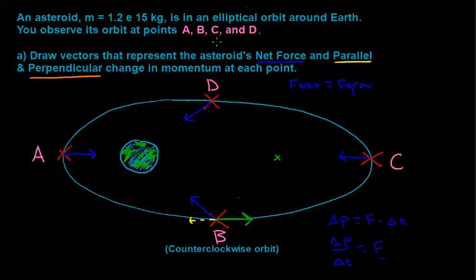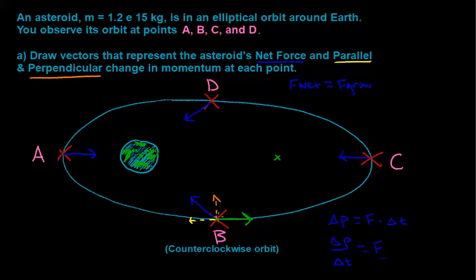In the same sense, our perpendicular change in momentum is going to act like a component of the net force. We draw it pointing out from the asteroid, and this perpendicular change in momentum essentially completes the component breakdown of the net force. With that, we have accurately drawn both vectors at point B.